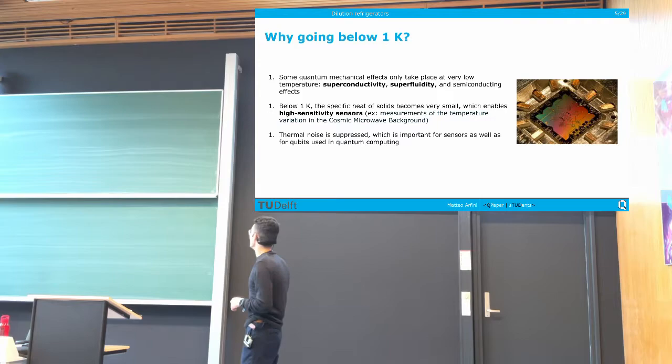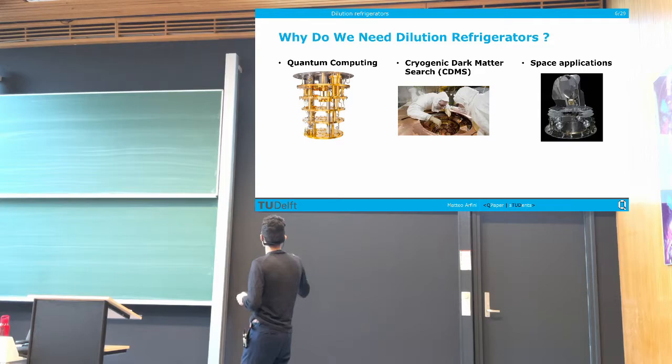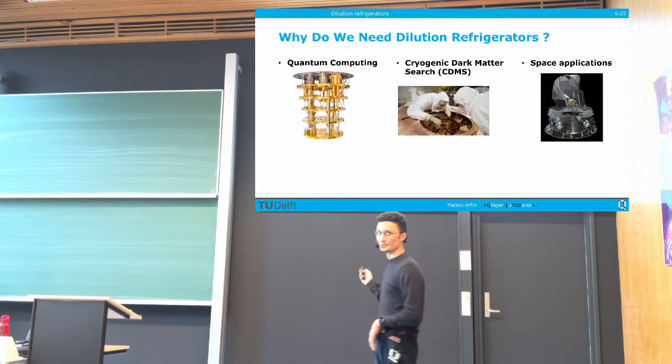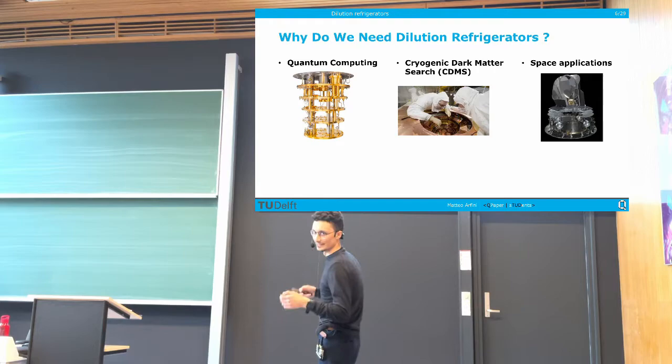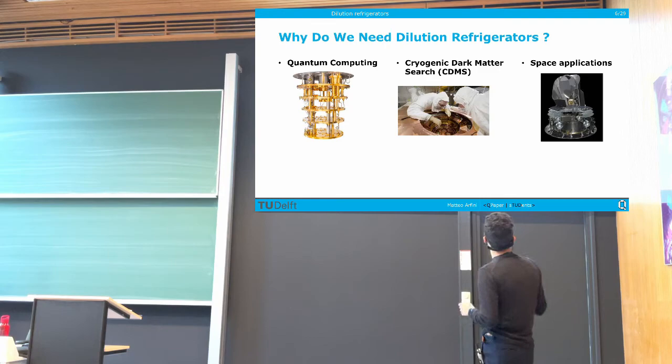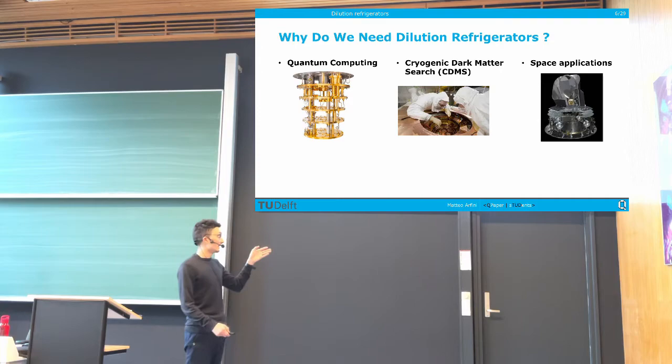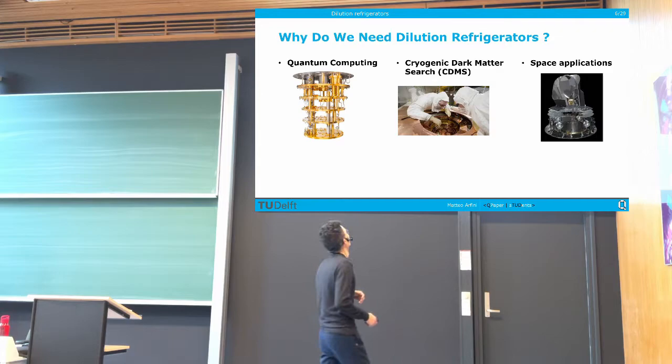In the next slide, you can see three examples. Probably everyone has seen one of these, because this is the kind of picture you come across when you type 'quantum computer' on Google. This is a dilution refrigerator for quantum computing, this is one for cryogenic quantum sensor research, and the third one is a satellite — because dilution refrigerators are also implemented in satellites sent into outer space to perform measurements at very low temperature.